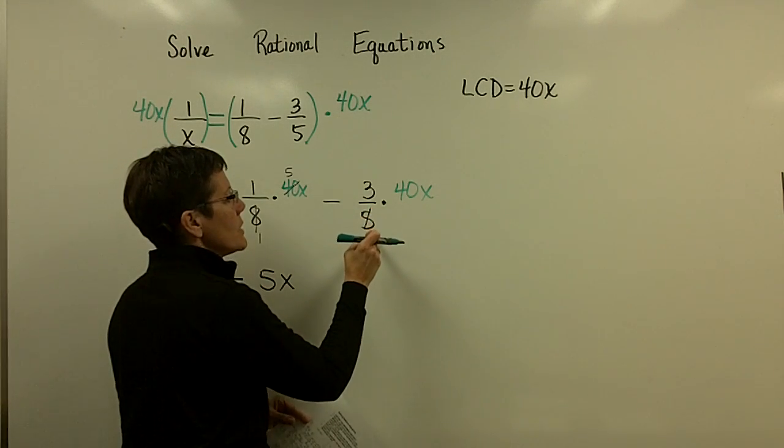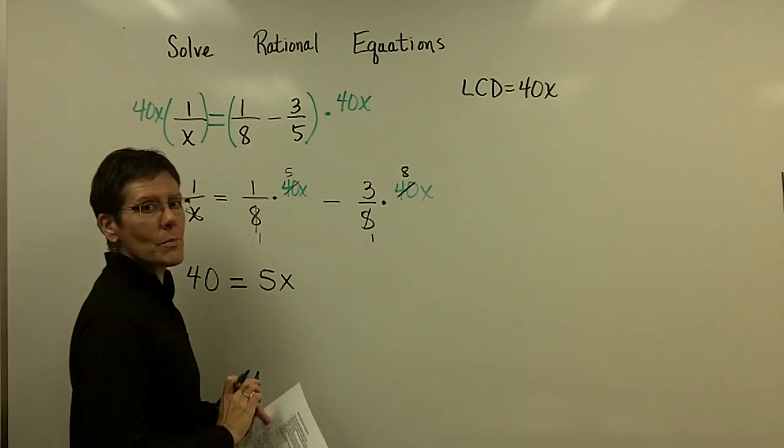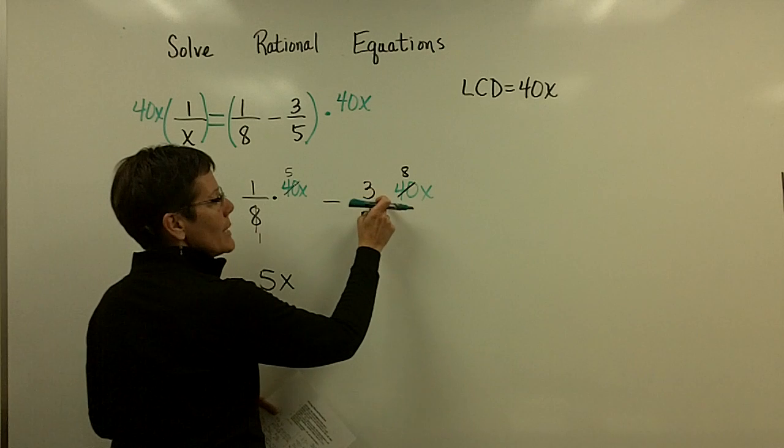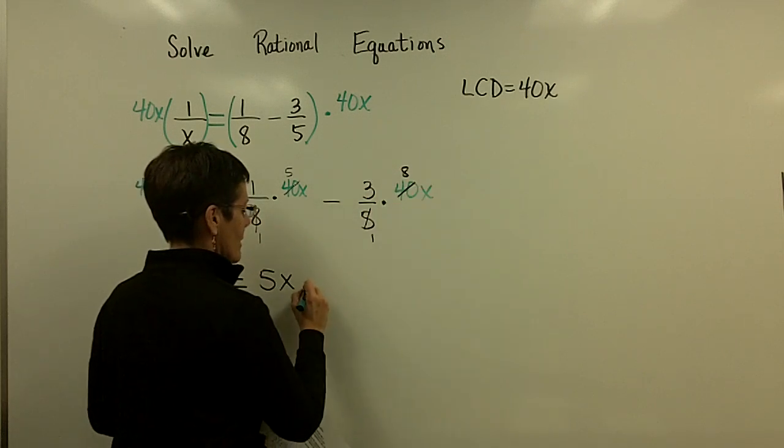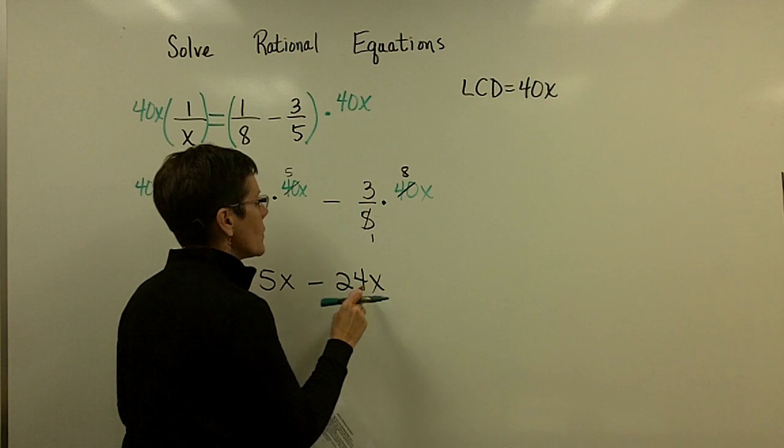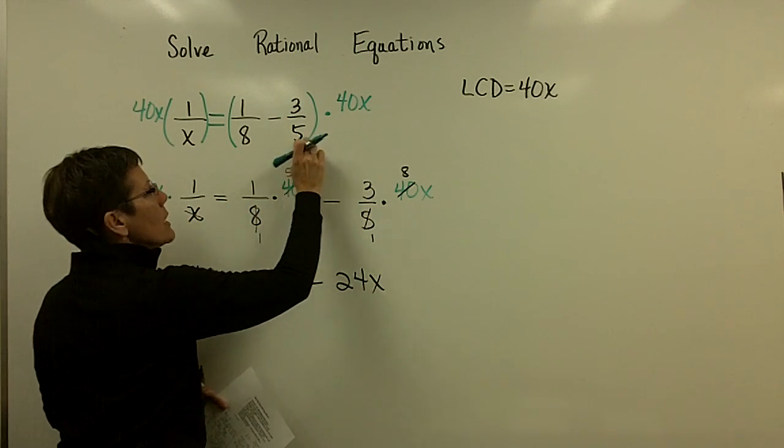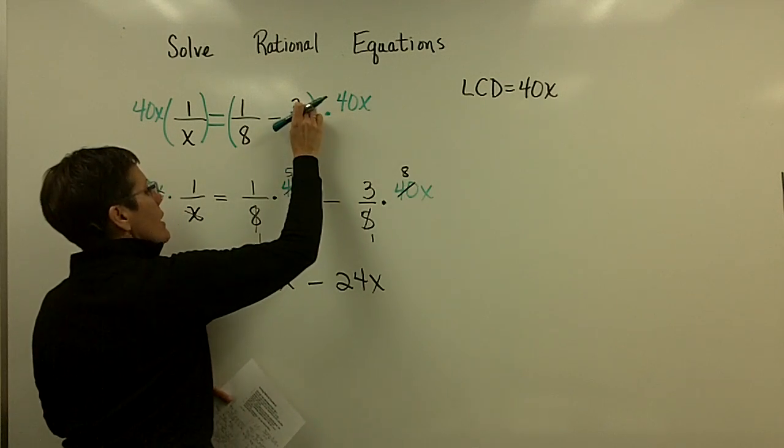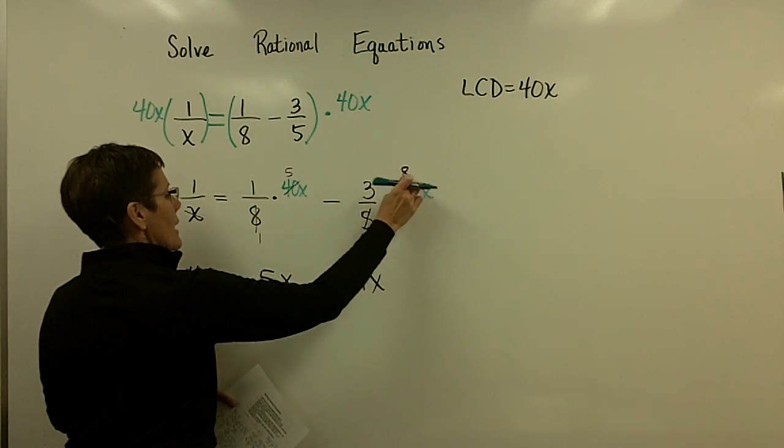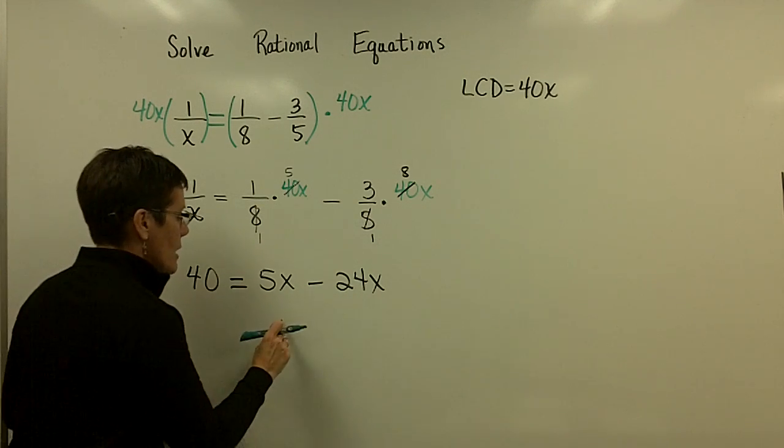And then the 5 goes into here once and it will always go into here. In this case, it goes in 8 times. And the 3 times 8x is 24x. Or, look at this original problem. It had a 5. It was missing an 8x. So the 3 got multiplied by an 8x.